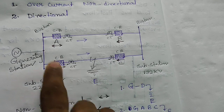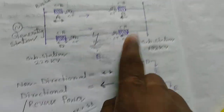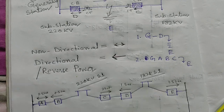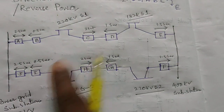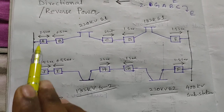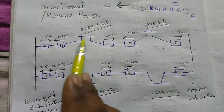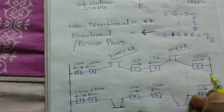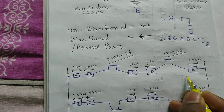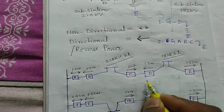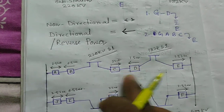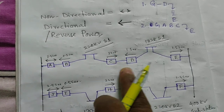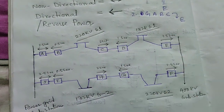So the faulty section will be isolated from the healthy section, and uninterrupted power supply through breakers A and B will be maintained. In case of interconnected substations, we use the non-directional element at the source end and the directional element at the receiving end. When the power flow direction and the relay symbol direction are the same, the relay will trip and isolate the system.